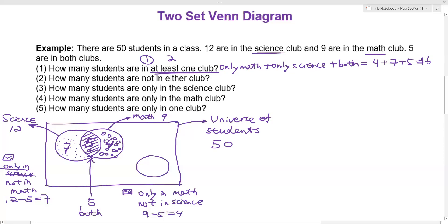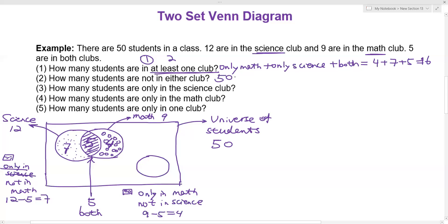The second question: how many students are not in either club? We know that 16 students are in at least one club, so we can simply use 50 minus 16, which equals 34. We'll write 34 in the empty area outside the circles.